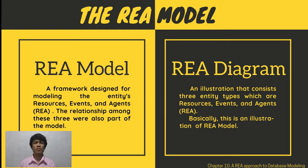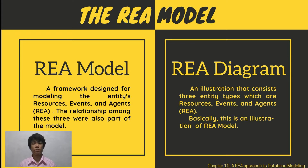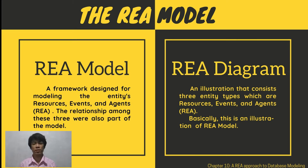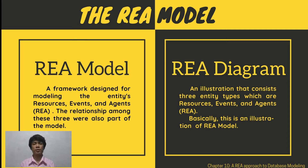What is the REA model? The REA model is a framework designed for modeling the entity's resources, events, and agents. The relationships among these three are also part of the model. Meanwhile, the REA Diagram is an illustration that consists of three entity types: Resources, Events, and Agents. Basically, this is an illustration of the REA model. Let me show you an illustration of an REA diagram.